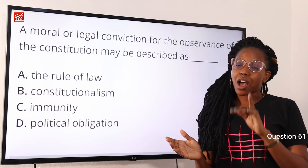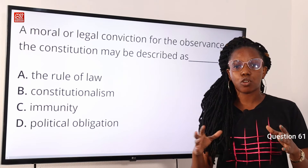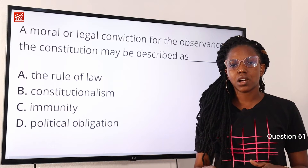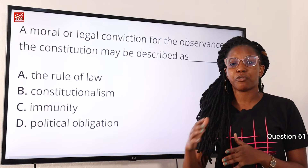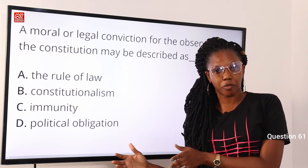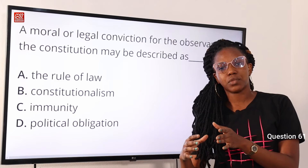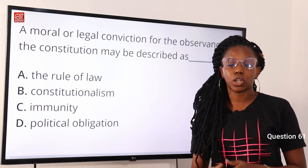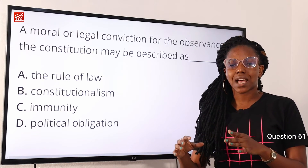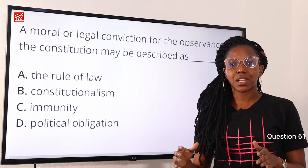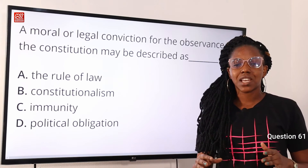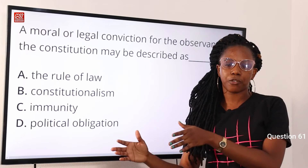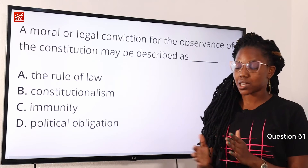What is constitutionalism? Firstly, we know that a constitution is a document of law containing the law of a nation. Constitutionalism is a set of principles or a system that provides a democratic government. When we talk about principles, we are talking about the presence of separation of power, the presence of an independent judiciary, and rule of law — principles set up to ensure the government is democratic. It describes compliance with the provisions of the constitution, which is why option B is the correct answer.